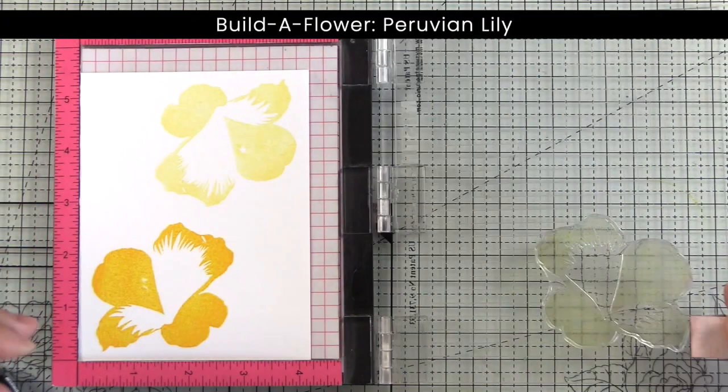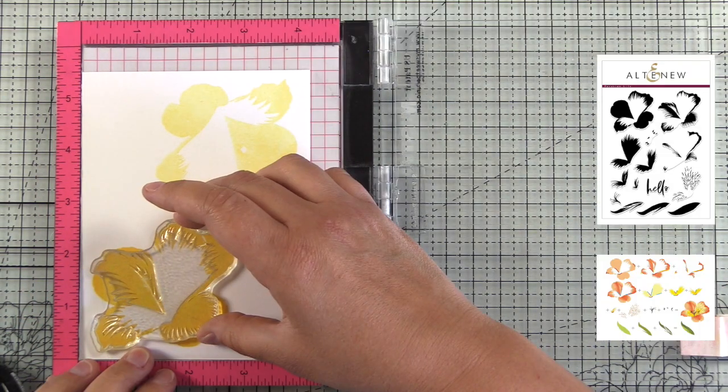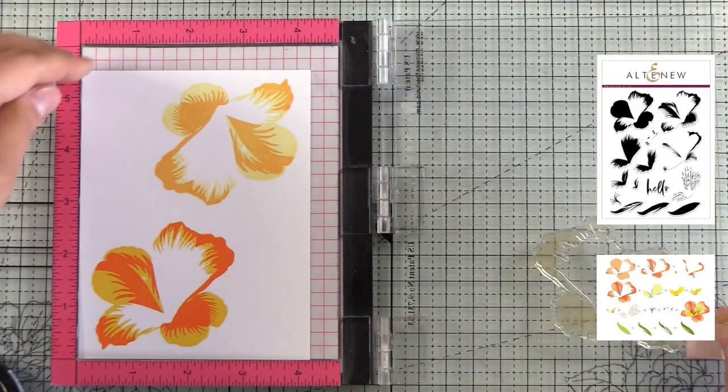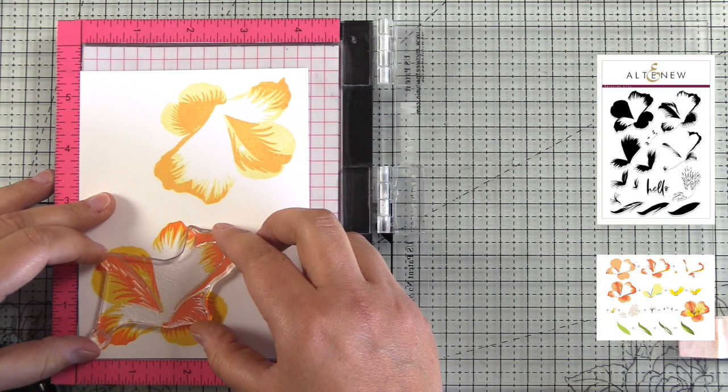I'm starting off with Build a Flower Peruvian Lily. For the first layer I'm stamping in warm sunshine. The second layer is orange cream.